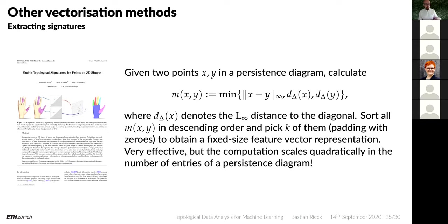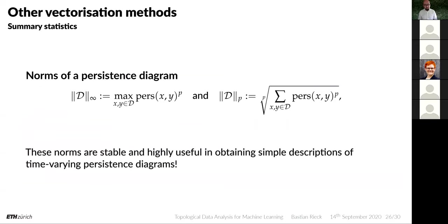There are also interesting summary statistics methods, particularly useful for time-varying persistence diagrams. There are well-defined norms of a persistence diagram based on the maximum persistence or the sum of all persistence values. These norms are stable with respect to small-scale perturbations and are useful for obtaining simple descriptions of persistence diagrams, especially over the same time scale. If you have a time series of persistence diagrams, you can calculate summary statistics and get a neat 1D curve to compare.